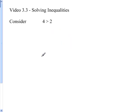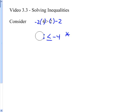But let's multiply. What happens if I take this and multiply both sides by negative 2? Now I'm going to get negative 8 is greater than negative 4. Wait a second — that's not true. Negative 8 is not greater than negative 4. That's actually smaller than negative 4. So we've got a bit of a problem here.